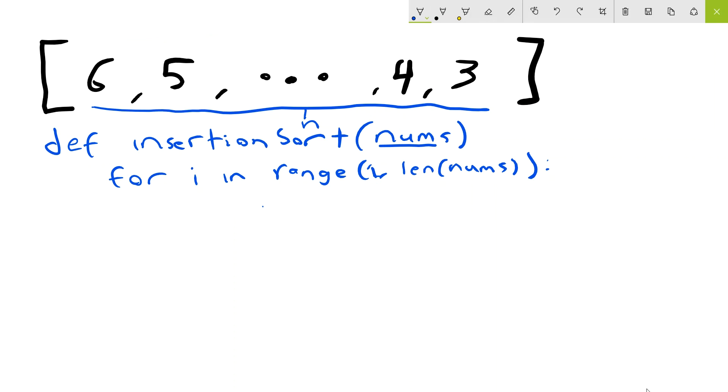Alright, so once we do that, I'm going to just have a variable that I define as current value. And that will start off by being just the value at the i-th index in numbers, so nums i-th index. Then we'll also have a position variable. And that will just be i.